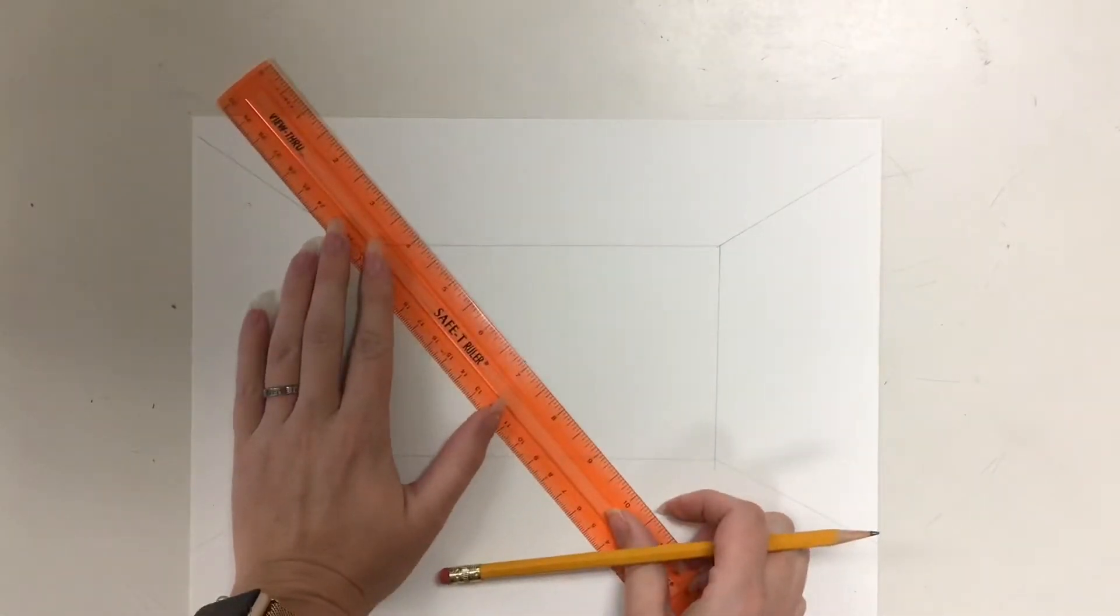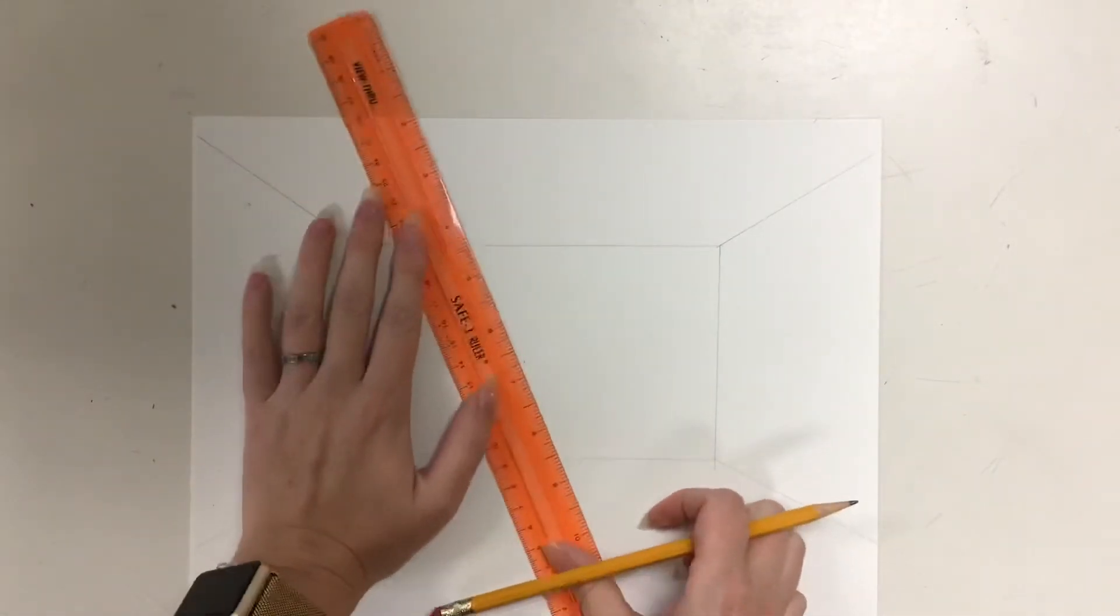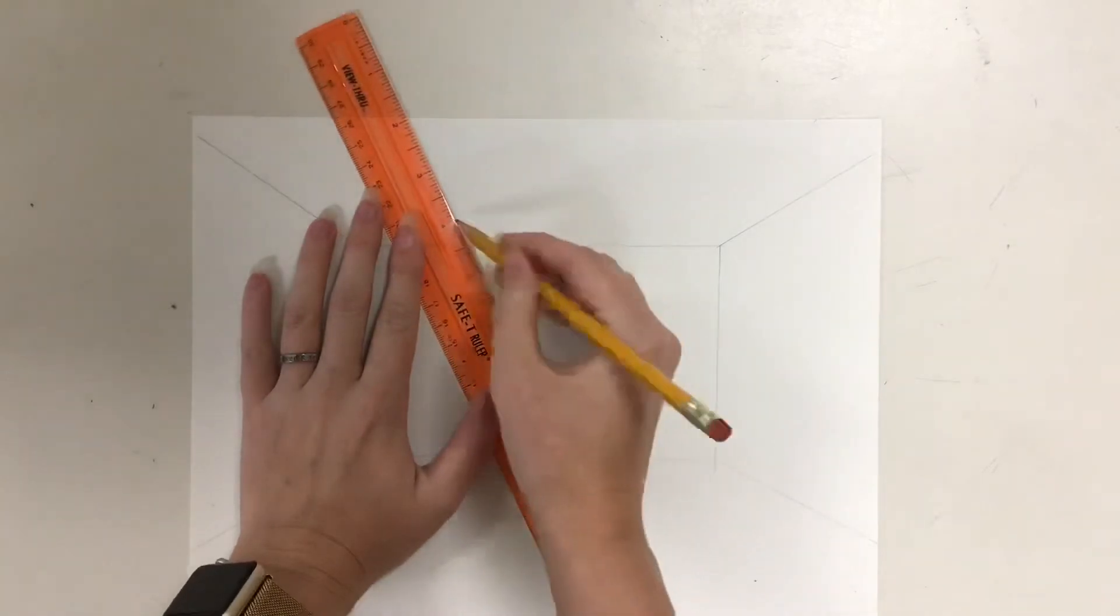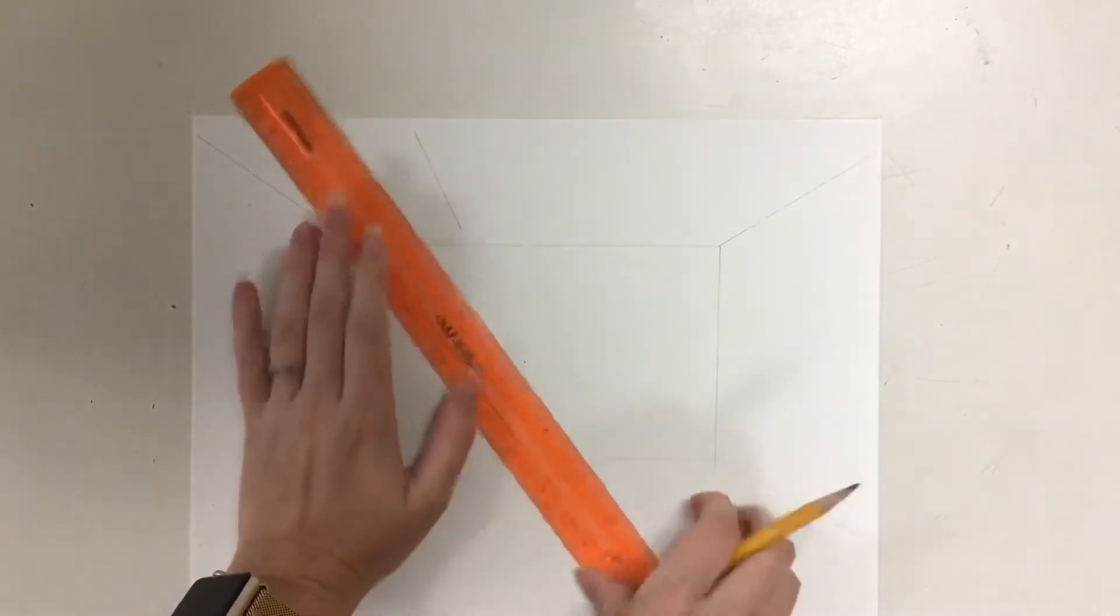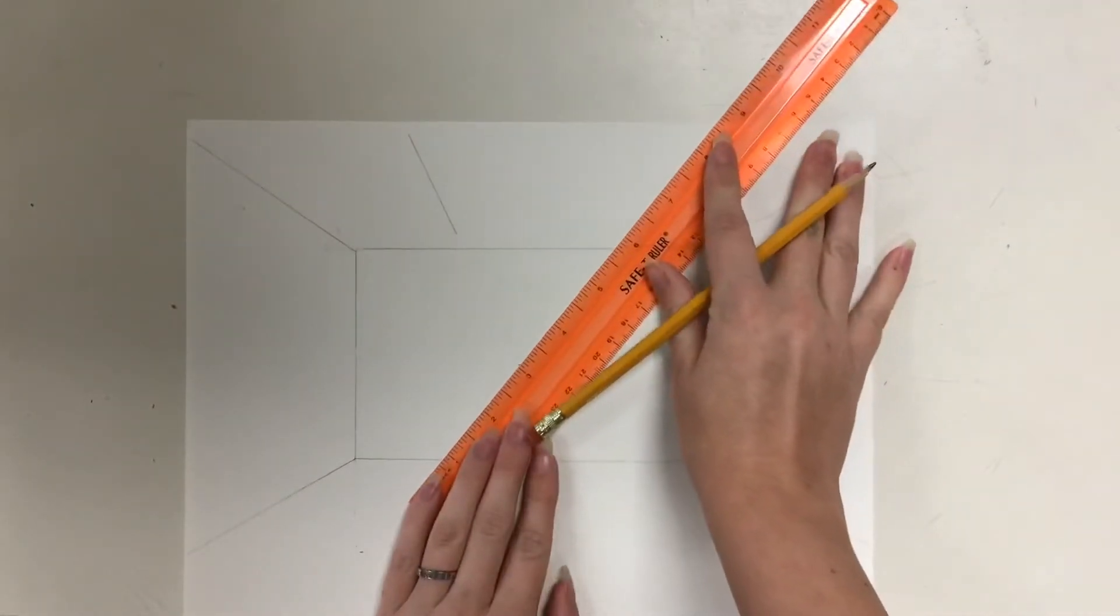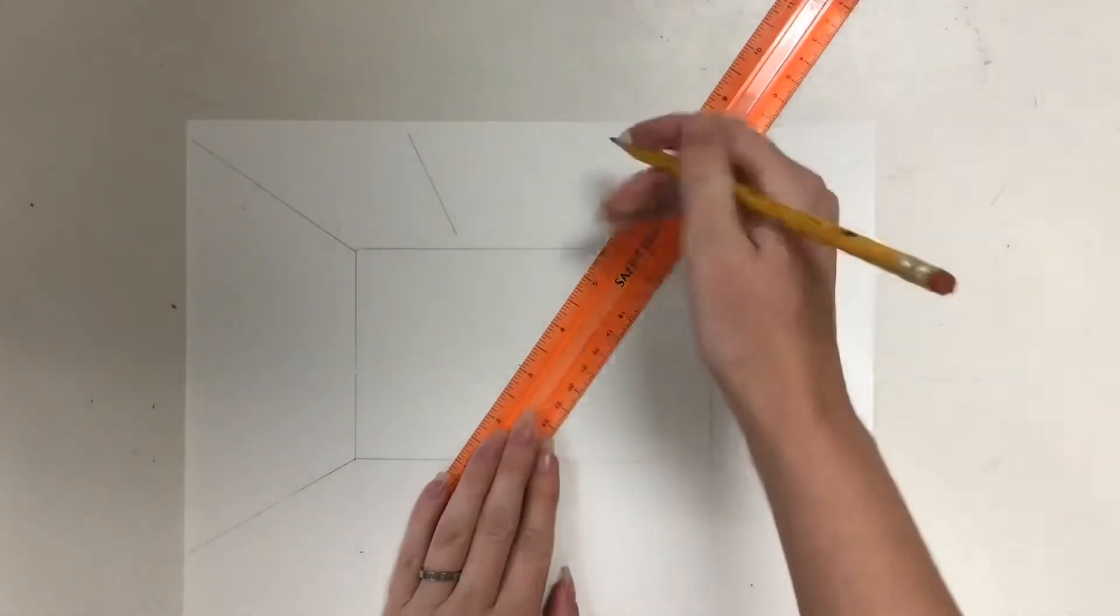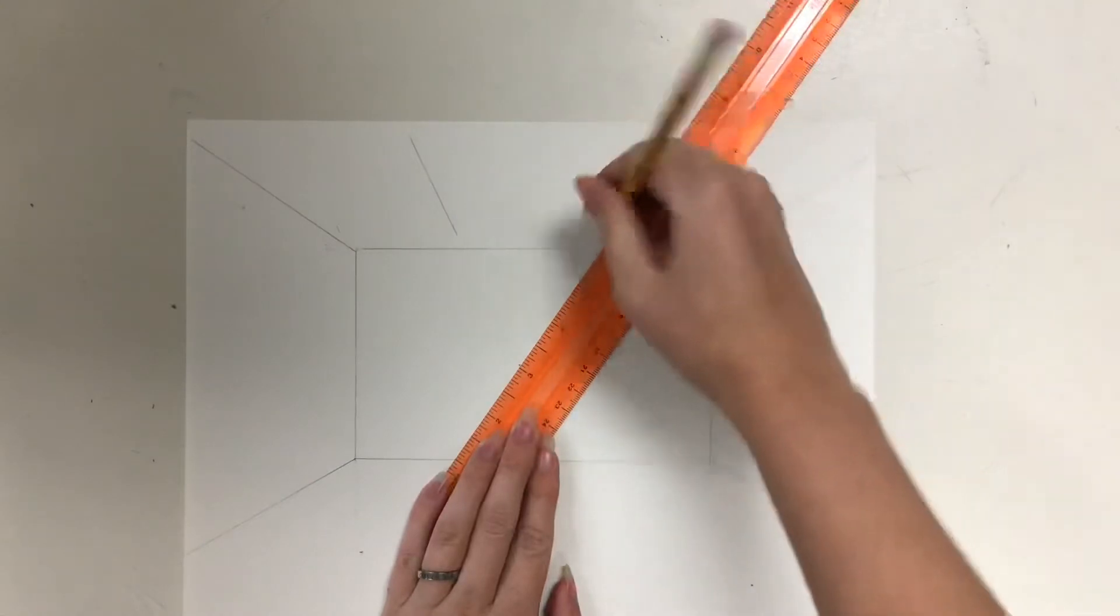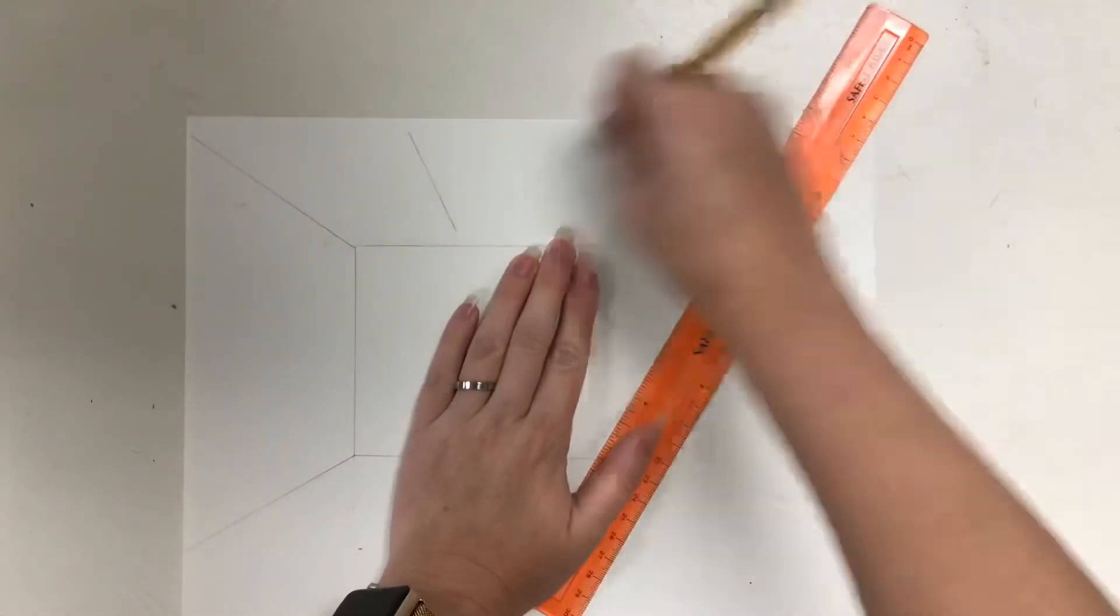So I'm going to start with my vanishing point and I'm going to be about right here. I'm putting in just some lines right here, just to give myself a space to draw in. It's actually probably a little bit too big. I'm gonna go a little bit smaller than that.